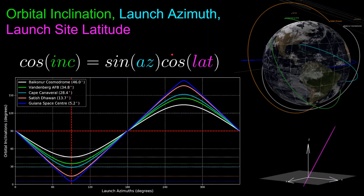Now we'll get into the mathematical relationship between orbital inclination, launch azimuth, and launch site latitude, which is represented by this equation. The plot on the bottom left illustrates this equation where we take the inverse cosine of both sides of the equation to get orbital inclination angle as a function of launch azimuth for different launch sites around the world. Focusing on the left side of the plot — inclinations less than 90 degrees and launch azimuths less than 180 degrees — the first thing to note is that each graph has a minimum exactly equal to the launch site latitude. This means the minimum inclination a rocket can directly launch to equals the latitude of where it launched from. The minimums occur at a launch azimuth of 90 degrees, which is launching due east.